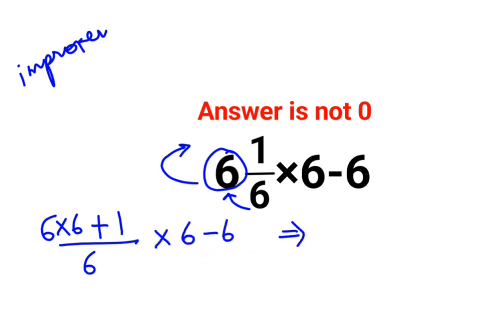So now what happens is, we have 6 multiplied by 6 plus 1 that gets you 37 upon 6 multiplied by 6 minus 6.